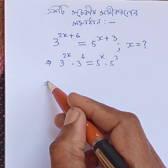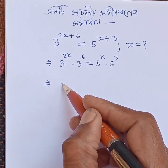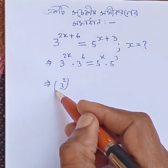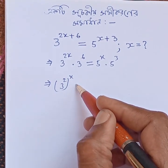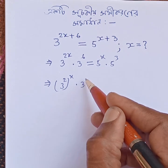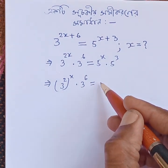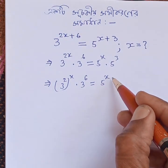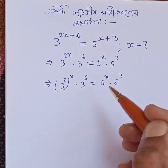This implies 3 squared to the power of x into 3 to the power of 6 is equal to 5 to the power of x into 5 to the power of 3.